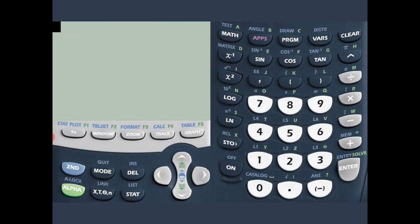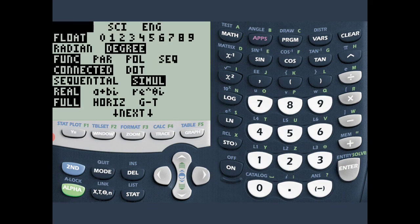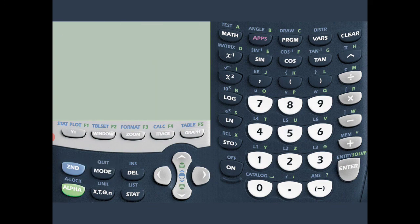Make sure your calculator setting is in degree mode. Third row, second option there. Press second, then cosine.